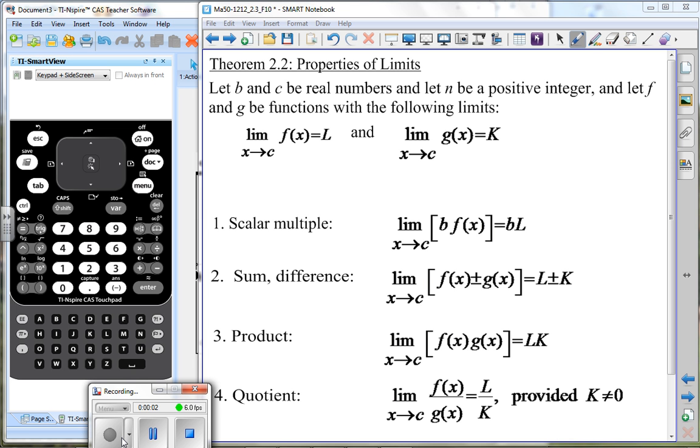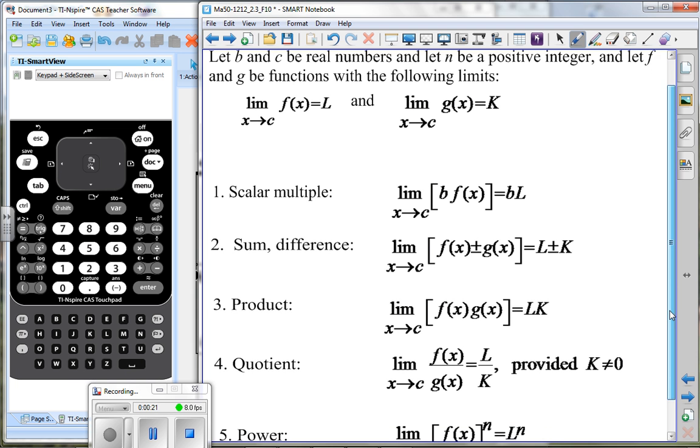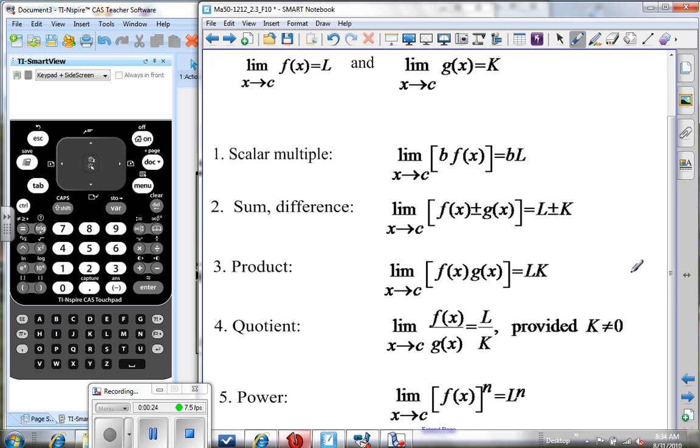Okay, there we go. Properties of limits, theorem 2.2. You're going to see these properties pop up over and over again. In fact, there's one more down here that you can't see. So let me move this up so you can look at it. It's called the power one.